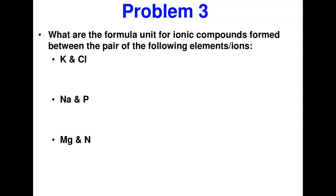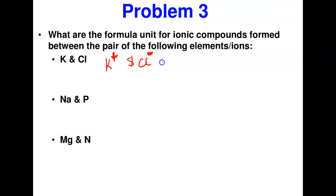Let's do more problems. Write the formula units for ionic compounds formed between the following pairs of ions. First: potassium is in group 1, so K⁺; combined with Cl⁻ (group 7, one minus). Since plus one and minus one cancel directly, no swapping is needed — the compound is KCl.